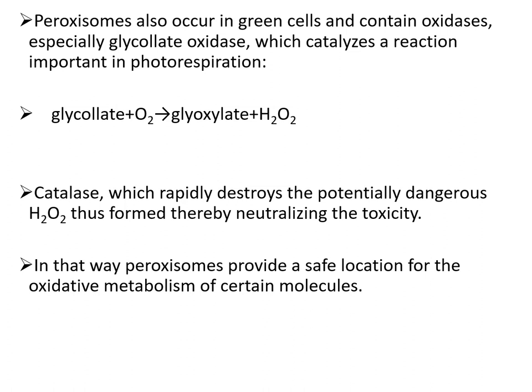Peroxisomes in green cells contain oxidases — especially glycolate oxidase, which catalyzes reactions important in photorespiration: glycolate plus oxygen gives glycolate plus hydrogen peroxide. Catalase then rapidly destroys the potentially dangerous hydrogen peroxide thus formed, thereby neutralizing its toxicity. In this way, peroxisomes provide a safe location for the oxidative metabolism of certain molecules.